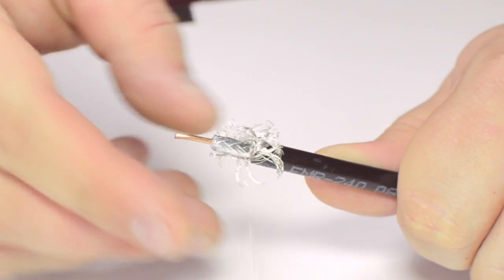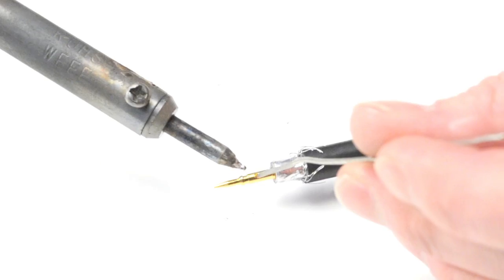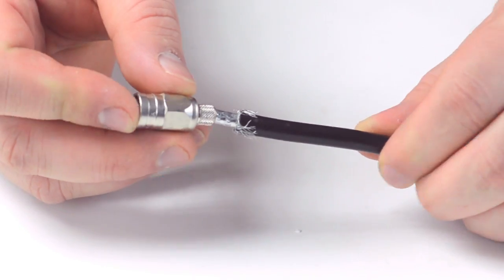Pull back the braided shield and insert the pin onto the center conductor. Solder the pin onto the center conductor and insert the connector housing over the cable.